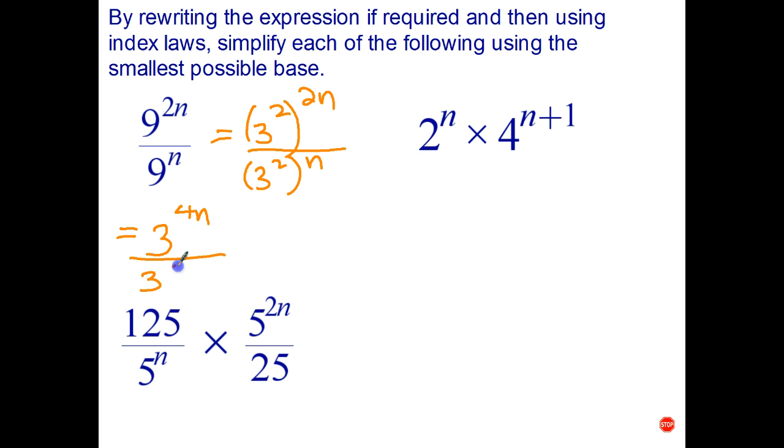And that becomes 3 to the... sorry, to divide powers with the same base subtract indices. 4n subtract 2n is 2n.